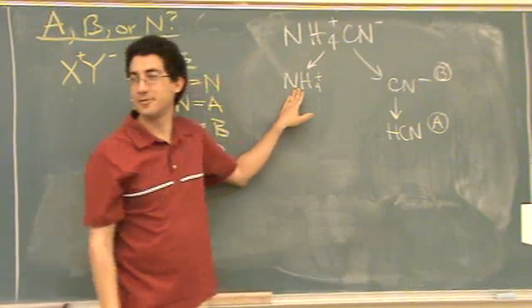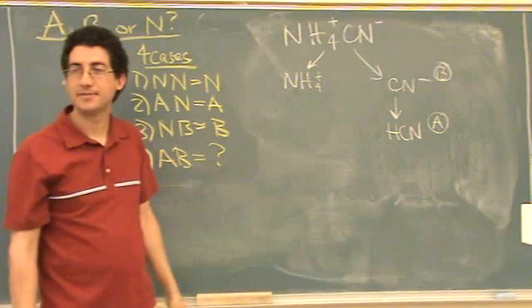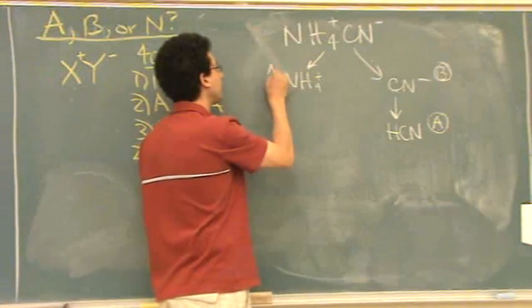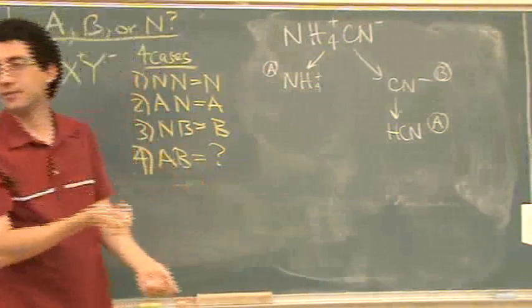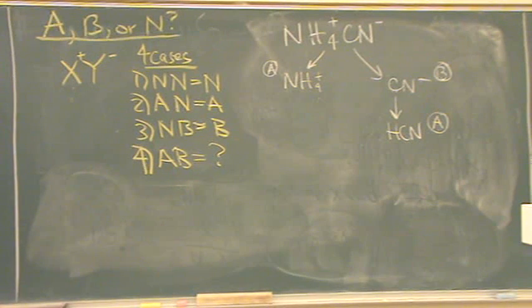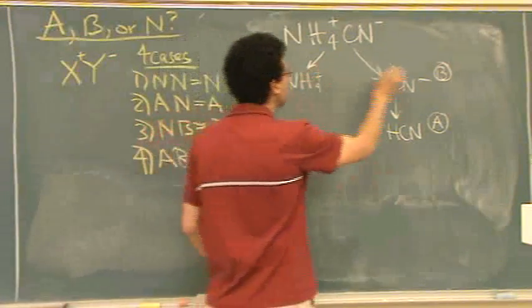Okay, NH4 plus, we just did this one, it is... Yeah, we don't even have to rewrite that one. So, if you see ammonia, if it's NH4 plus, it's acid. If it's NH3, it's a base. So, acid plus a base.